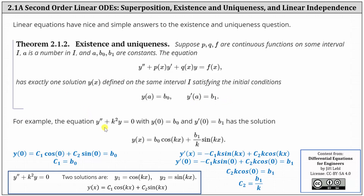As an example, the equation y'' + k²y = 0 with initial conditions y(0) = b₀ and y'(0) = b₁ has the solution y(x) = b₀·cos(kx) + (b₁/k)·sin(kx). We already know y₁ = cos(kx) and y₂ = sin(kx) are two solutions. Using superposition, y(x) = c₁·cos(kx) + c₂·sin(kx) satisfies the differential equation. From here, let's verify the initial conditions are met when c₁ = b₀ and c₂ = b₁/k.